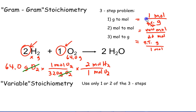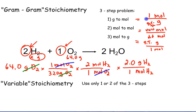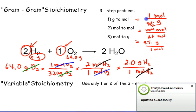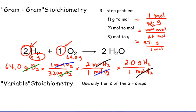If we stopped the problem here, moles of O2 cancel and our unit would be moles of hydrogen — but we're trying to find grams of hydrogen. So one more fraction: moles of H2 in the denominator, grams of H2 in the numerator. From the periodic table, one mole of H2 is 2.0 grams. Moles of H2 cancel, leaving grams. The math is 64 divided by 32, which is 2, times 2 is 4, times 2 again is 8 — so to three significant figures, 8.00 grams of hydrogen.